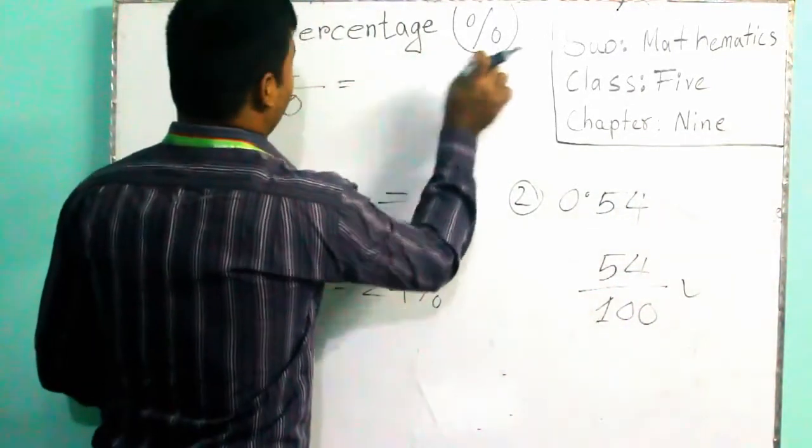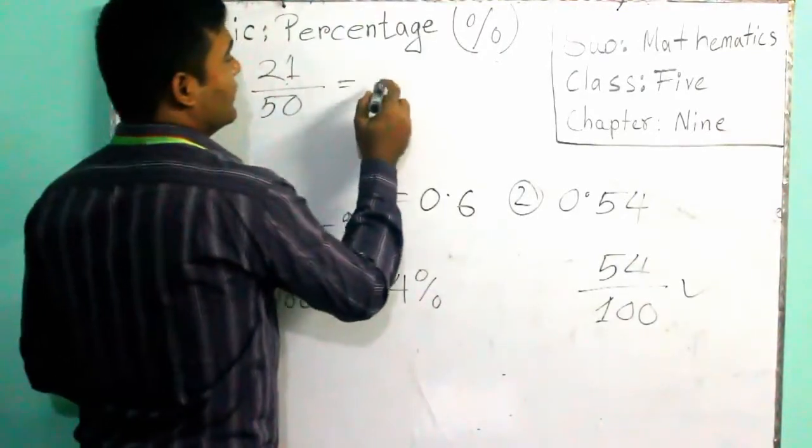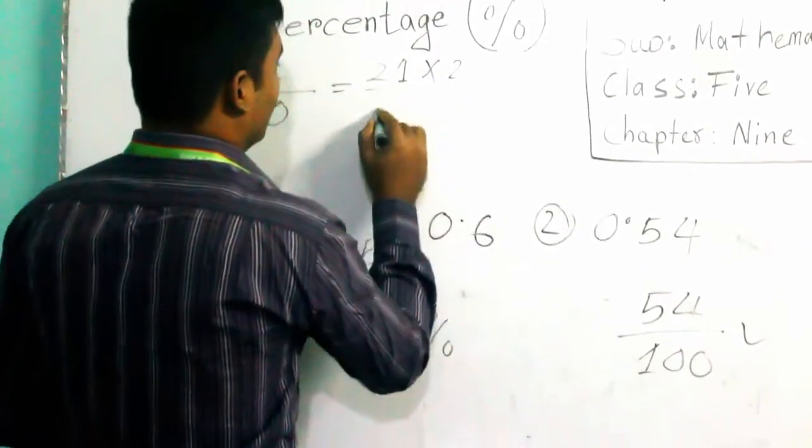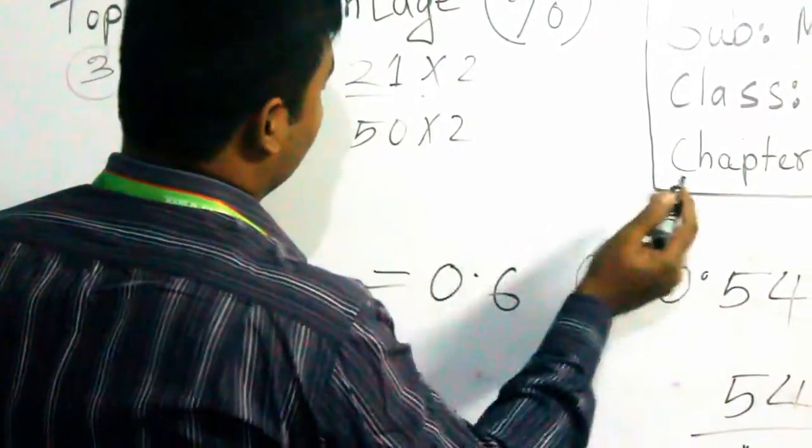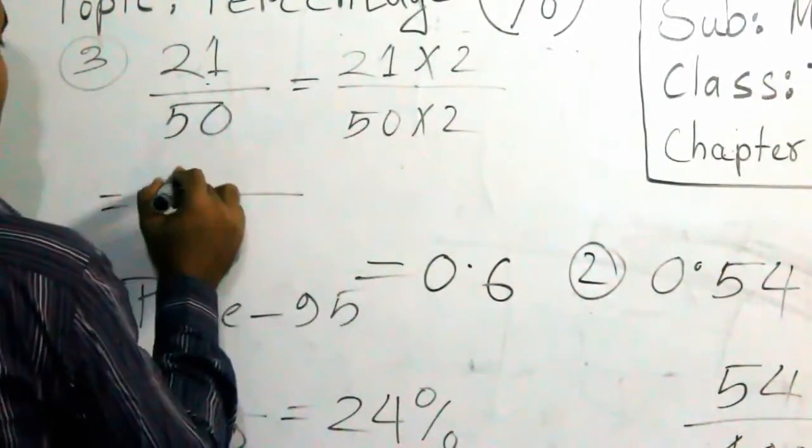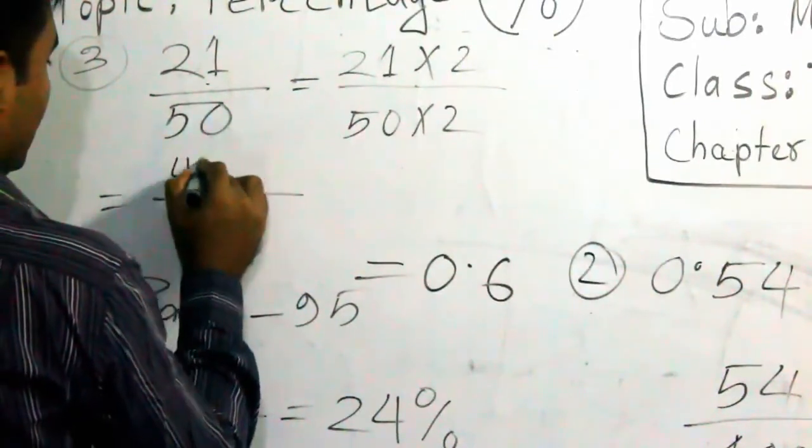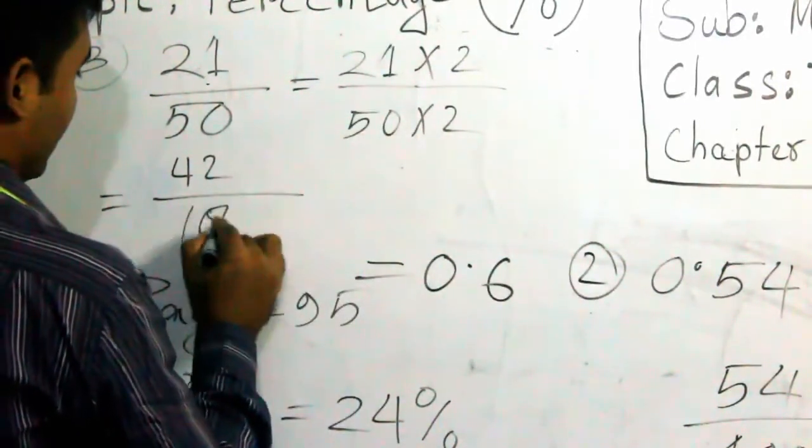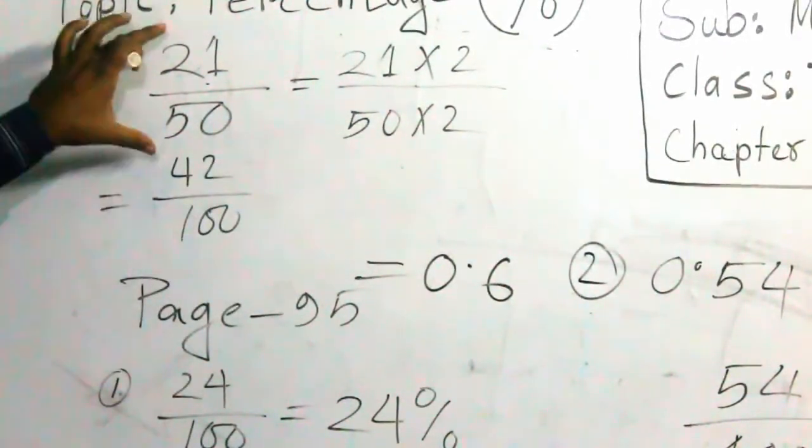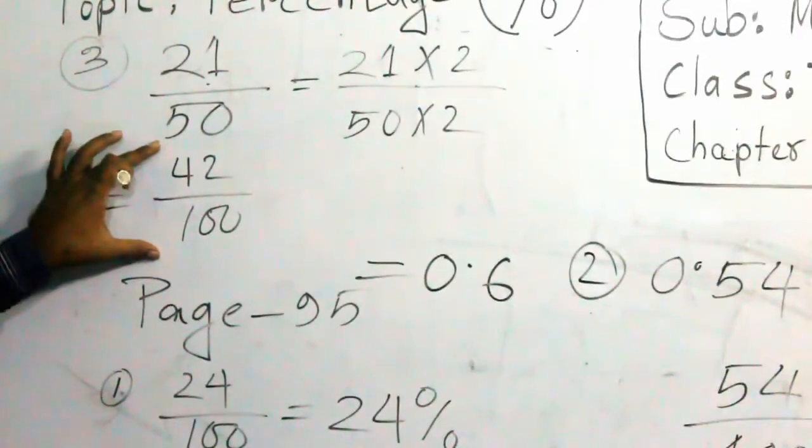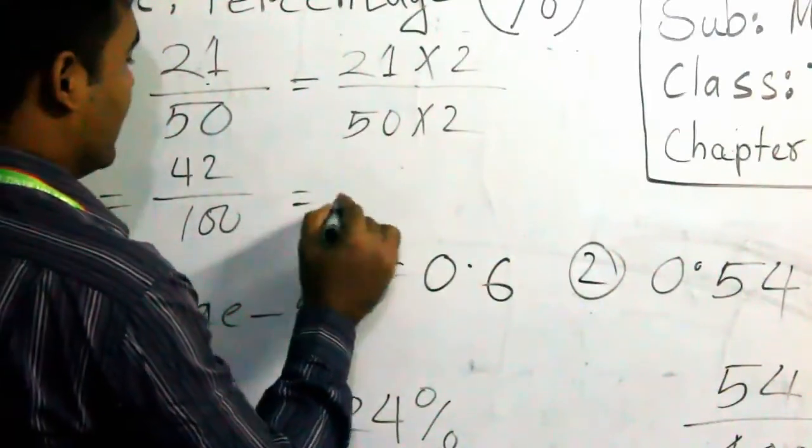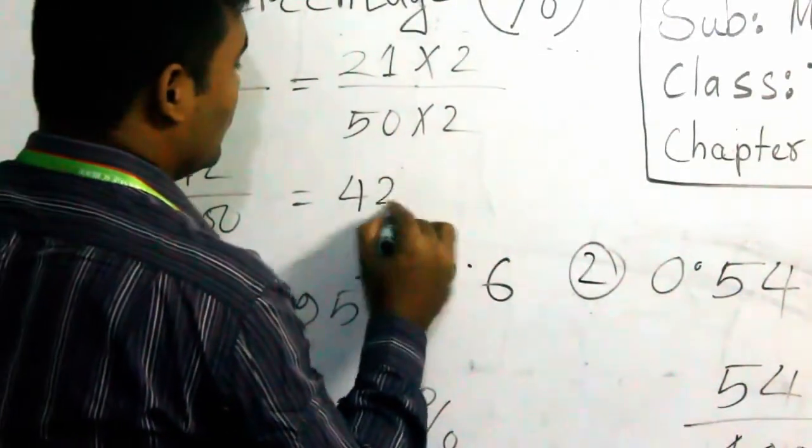We need to make this one 100. This is very easy. 21 into 2, 50 into 2. That means we will get this one easy. So 21 times 2 is how much? 42 and this is 100.